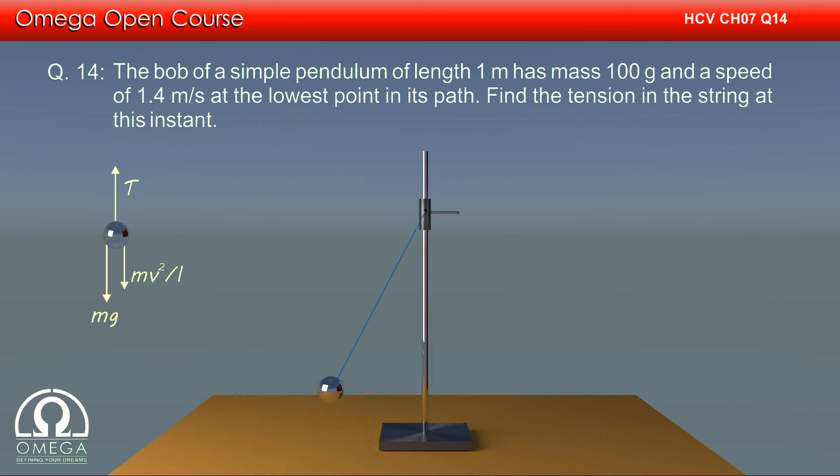In our frame, bob is at rest, therefore net force on it must be zero or T must be equal to Mg plus mv square by L.